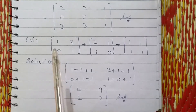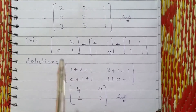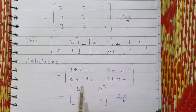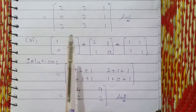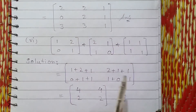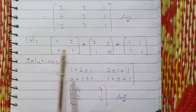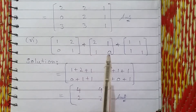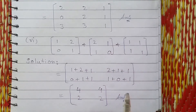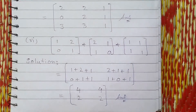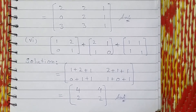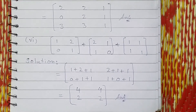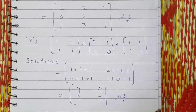Here again the corresponding elements have been added: 1 plus 2 plus 1 which is 4; 1 plus 2 plus 1 also 4; 2 plus 1 plus 1 which is also 4; 0 plus 1 plus 1 which is 2; and 1 plus 0 plus 1 which is 2. 1 plus 2, and that is all — no more questions for this lecture. I hope you like it.